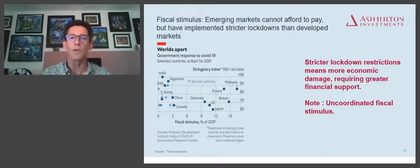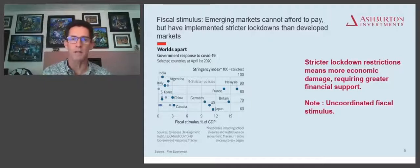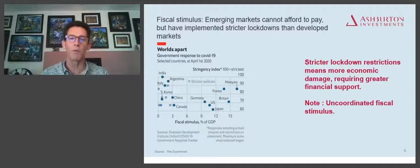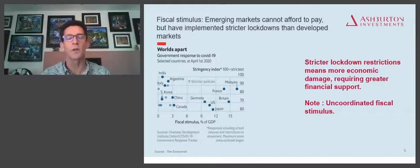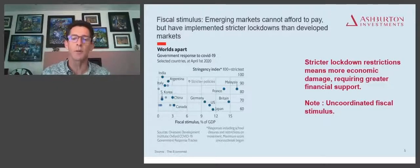Countries like India and Argentina have less capacity to provide fiscal stimulus. We know the lockdown itself causes the economic impact. We will fast approach this tension between the ability to provide some form of safety net through fiscal stimulus versus the quest to save lives. This uncoordinated approach to fiscal policy will play a major role in terms of each country's different experience from that perspective.